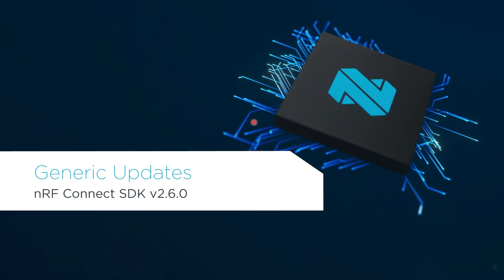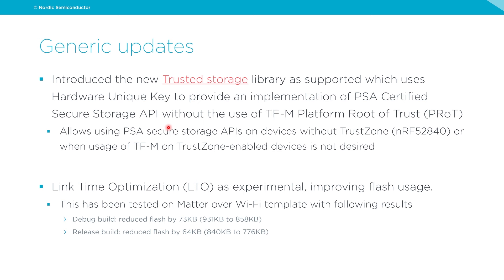Before getting started with the generic updates, I want to point out two terms you'll hear throughout the presentation regarding software maturity: 'supported' and 'experimental.' Experimental means the feature has had limited test coverage, is not fully mature, and may have API changes or incomplete functionality. Supported means it's fully tested, finalized, APIs will not change, and it can be used in a production environment.